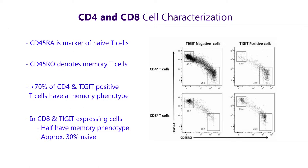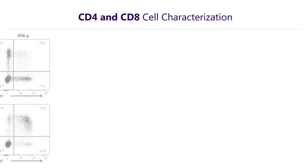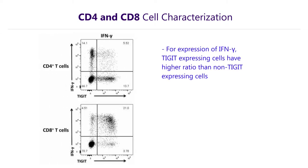We looked at cytokine production from CD4 and CD8 T-cells as well. We found that TIGIT expressing cells had a higher ratio of cells that expressed interferon gamma compared to non-TIGIT expressing cells. This is most evident in CD8 T-cells. Of non-TIGIT expressing CD8 cells, only 6% express interferon gamma.